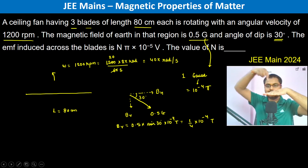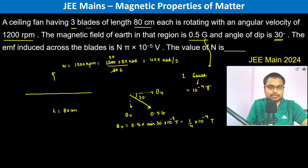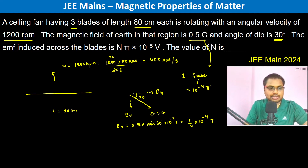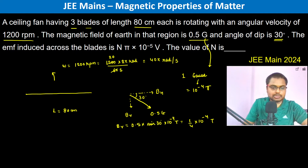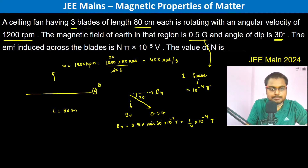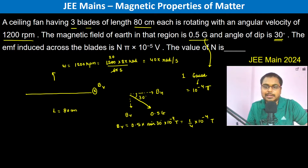Since this is a fan rotating, we consider the vertical component of the magnetic field. If omega is in this direction (the fan's axis), then the horizontal magnetic field B_h is not going to play any role. Only the vertical component B_v matters here.